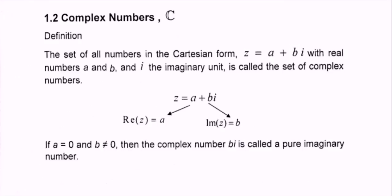Hello everyone. In this lesson we are going to discuss the complex number. Based on the definition, the set of all numbers in the Cartesian form where we have the complex number denoted as z equals a plus bi, with the real numbers a and b, and the i is the imaginary unit, is called the set of complex numbers.